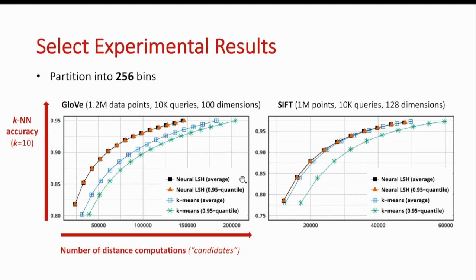For each algorithm, we plot both the average number of candidates and the 95th quantile. The average corresponds to the runtime of typical queries and describes the throughput of the data structure, whereas the 95th quantile corresponds to the runtime of the slowest queries and describes the latency of the data structure. As you see, we do better than k-means clustering, which is the most successful baseline that we have tried.